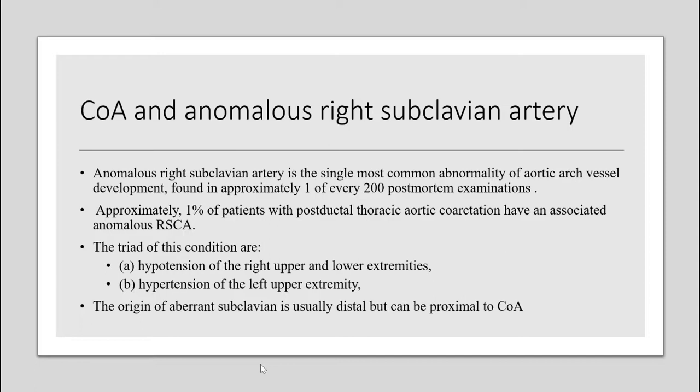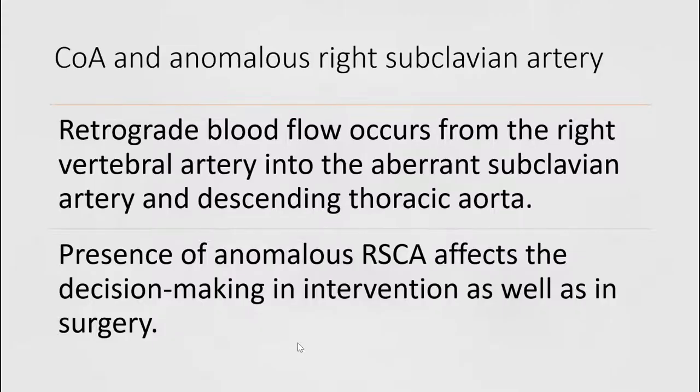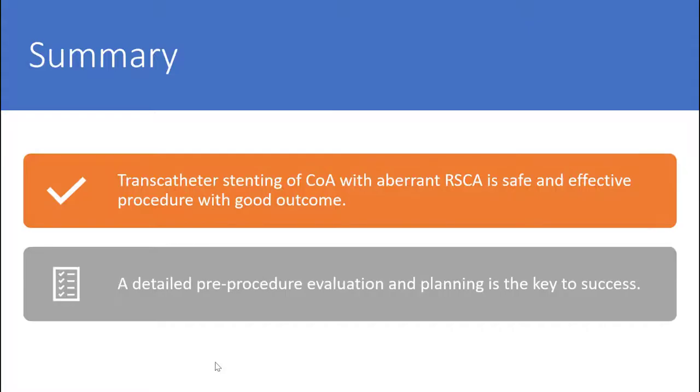The origin of the aberrant subclavian is usually distal but can be proximal to the coarctation of the aorta. In patients with coarctation of the aorta and anomalous right subclavian artery, retrograde blood flow occurs from the right vertebral artery into the aberrant subclavian artery and descending thoracic aorta. The presence of anomalous right subclavian artery significantly affects decision making in both intervention and surgery.